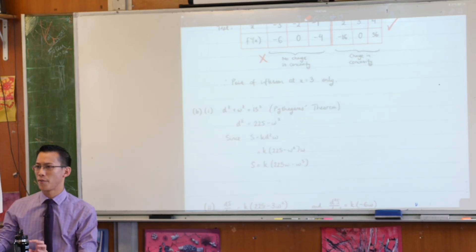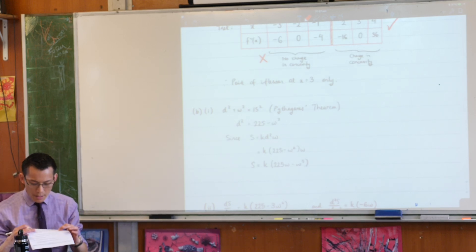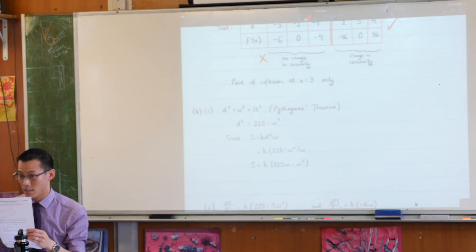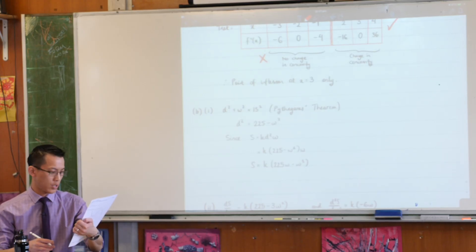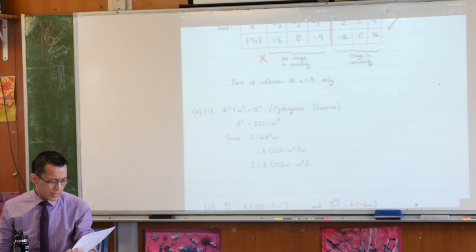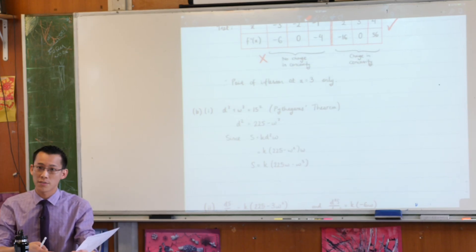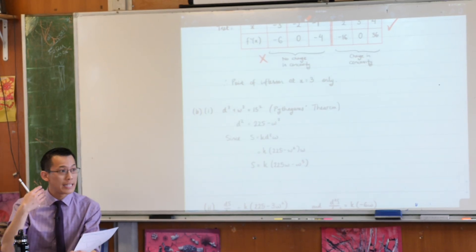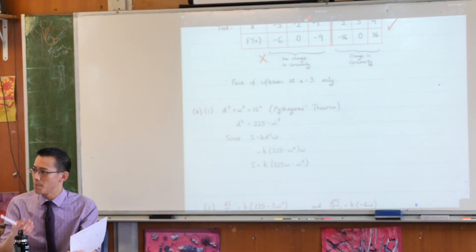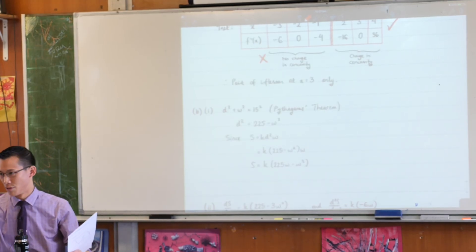Now just look on the question paper, before we look at my answer, look at the question paper. Immediately before part one, there's already an equation which has an s in it, right? It says s equals k d squared w. What are we doing from that equation to this one where I'm supposed to show? What's the difference? Yeah, you do a substitution to eliminate d. Now the reason we do this is simple. I want to differentiate, so I want an equation with one variable, not two.